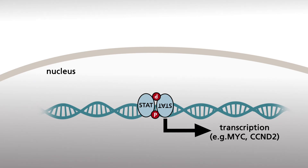The JAK-STAT pathway mediates the signals of many different cytokines. Specificity is achieved by the specific combinations of JAKs with various STATs, which are each able to bind to different cytokine-responsive elements.